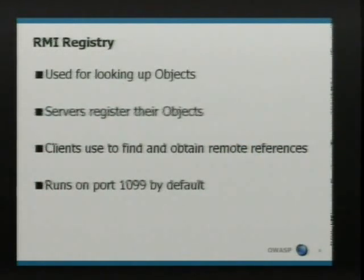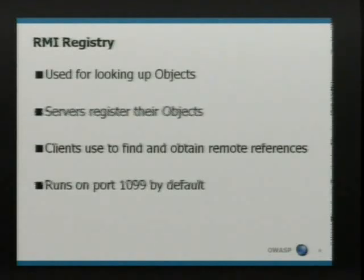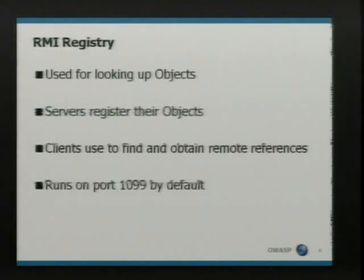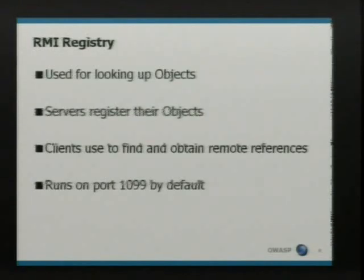Just before we begin, attacking an RMI service — there are a couple of details you need to be aware of, which is the RMI registry. You run the RMI registry on the server as a separate process, and this is where you bind your objects. This is how other developers and clients know how to communicate with your server — they need to know there's an object on the server side and how to make references to it, very much like any typical distributed computing technology. The server registers their objects, clients retrieve a name to get a remote reference and start talking to it, provided they have the stub. By default, it runs on port 1099.